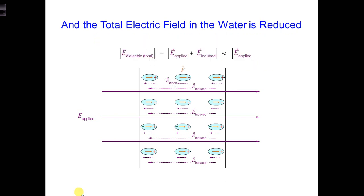As a result, the total electric field, the amplitude of the total electric field in the slab, it's the sum of both E applied, going to the right, and E induced, going to the left. So they're pointing in opposite directions, so the total electric field is going to be reduced compared to E applied. It's going to be smaller.